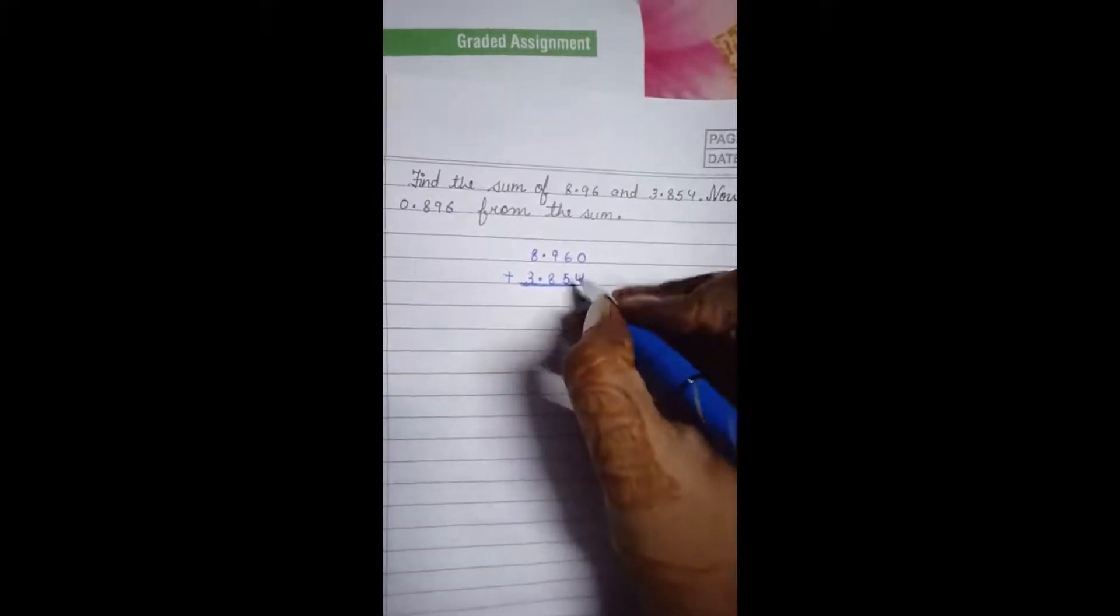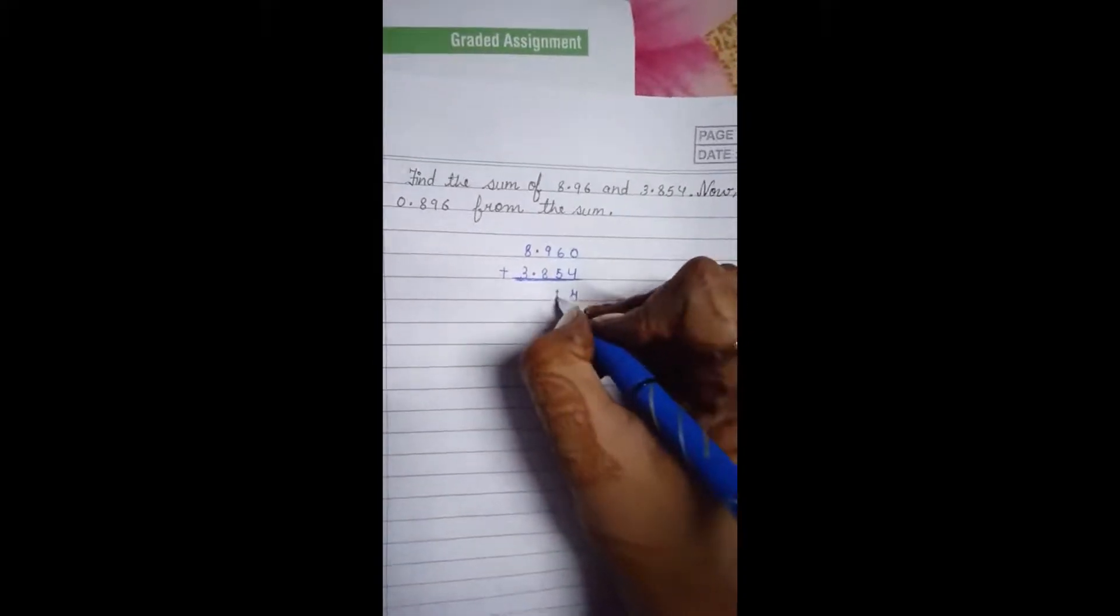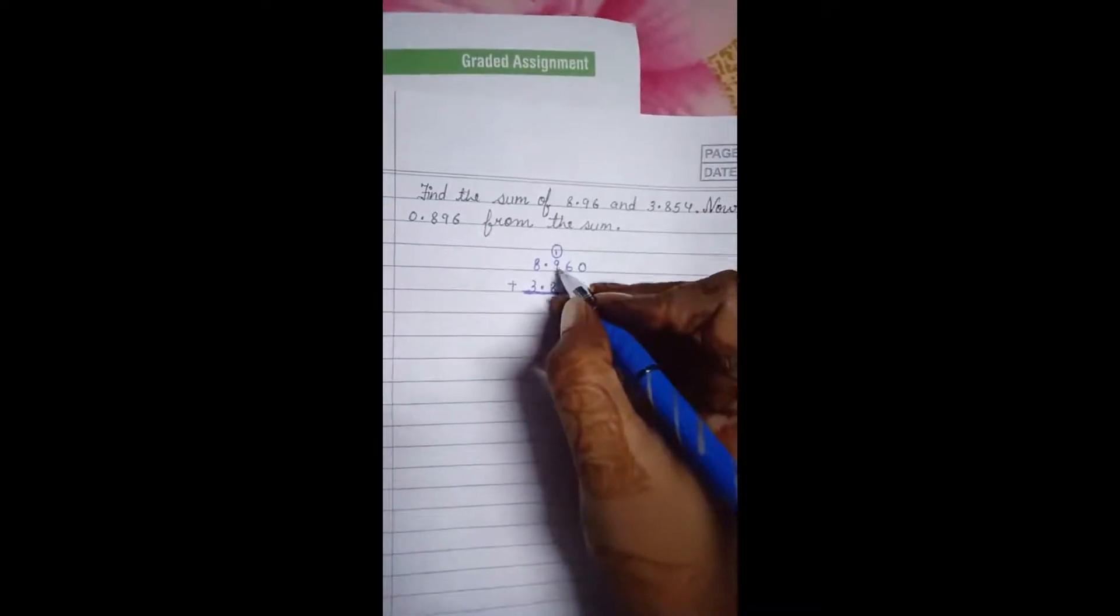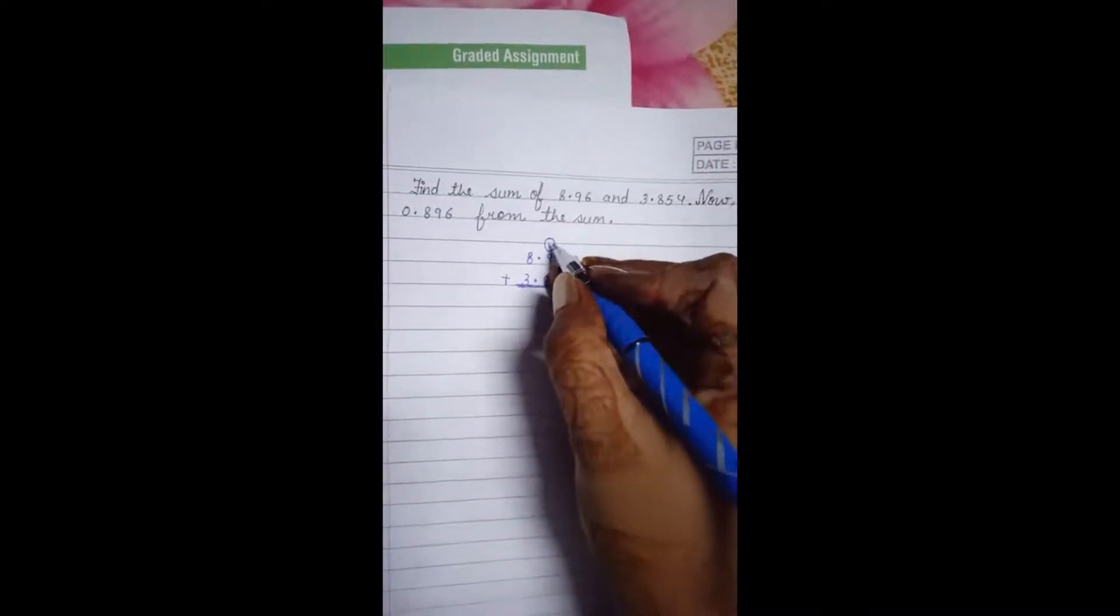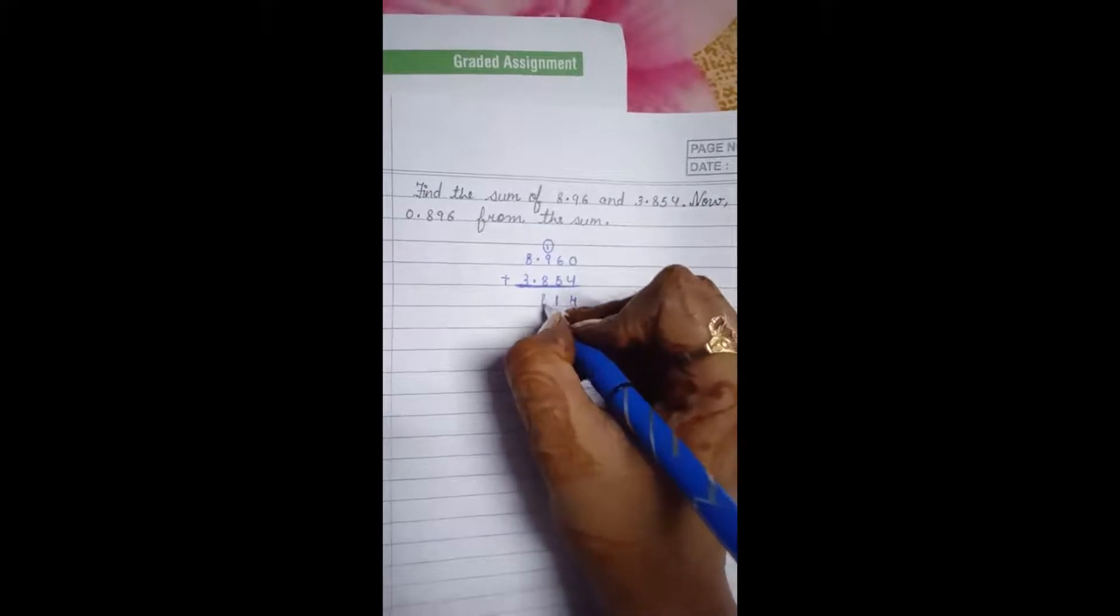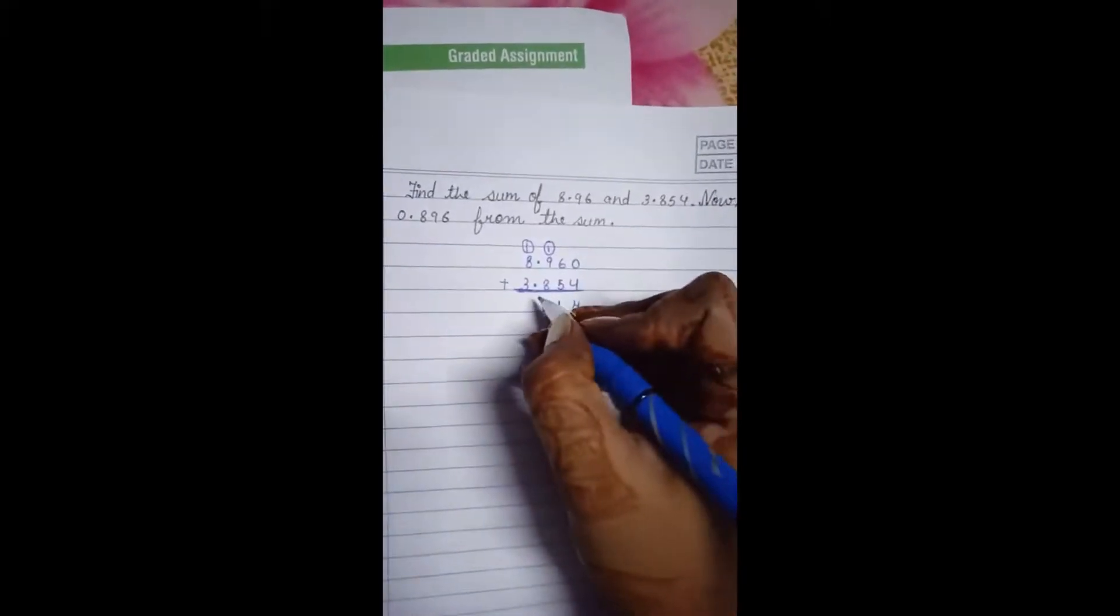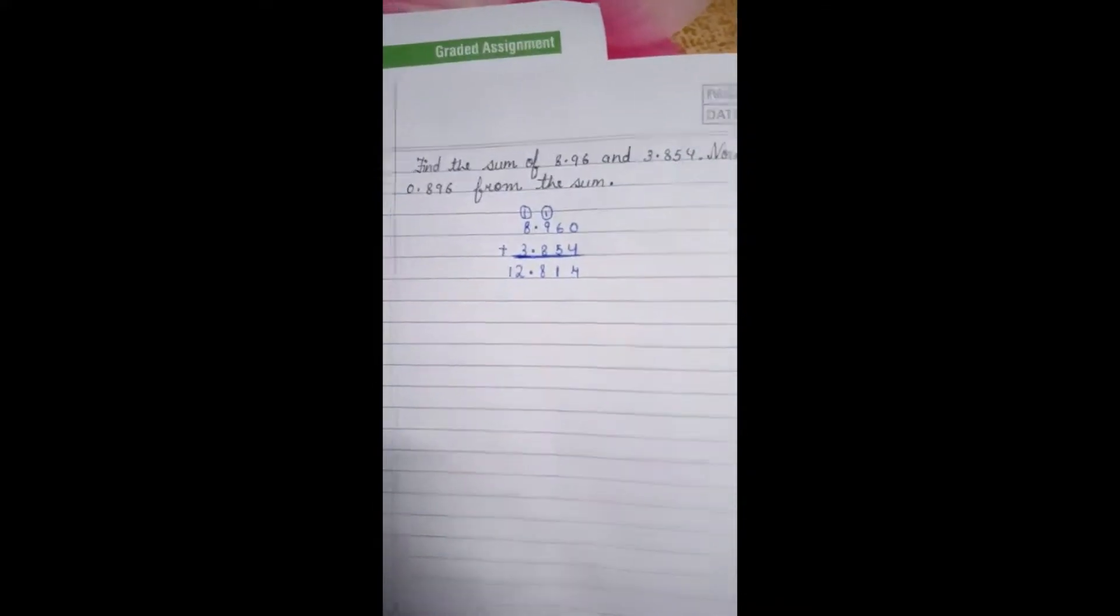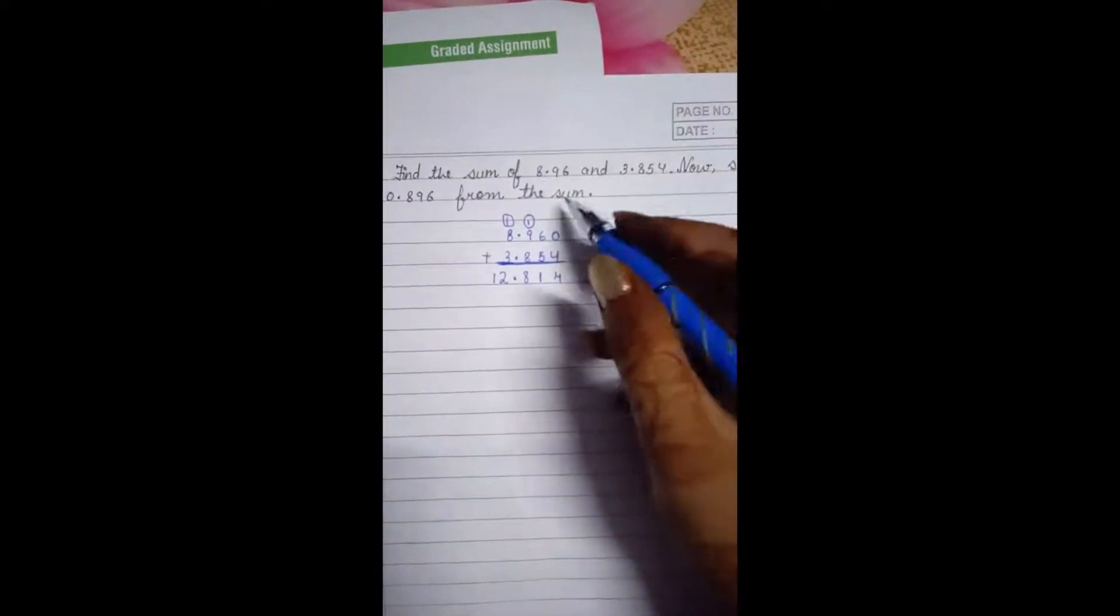0 plus 4 is 4. 6 plus 5 is 11, 1 will be carry forward. 8 plus 9 is 17, 17 plus 1 is 18. Now 8 plus 1 is 9, 9 plus 3 is 12. The decimal point will be inserted. So we have added these 2 numbers.